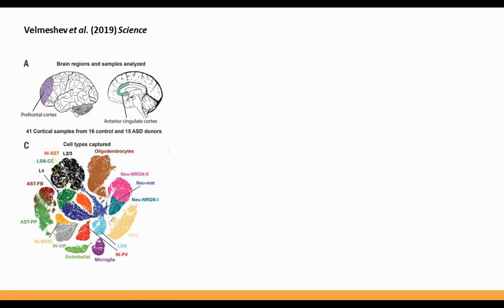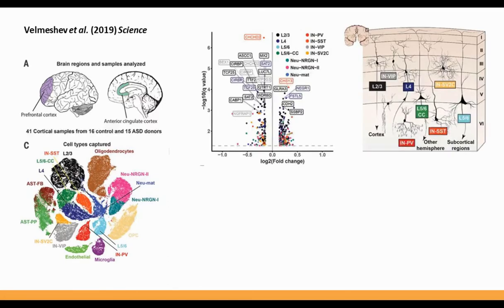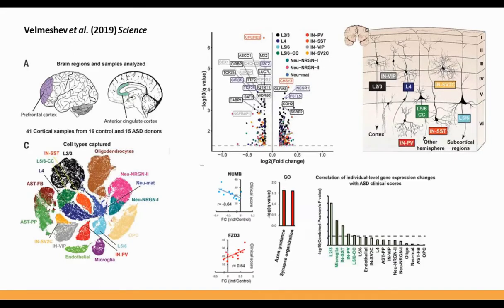Another more recent example is a study using brain samples from both controls and patients with autism spectrum disorder. They performed deep subtyping and cell type-specific differential expression, identifying cell type-specific differentially expressed genes correlated with clinical scores. This information was then used to figure out which cell types were most relevant for the disease and might be playing an important role.